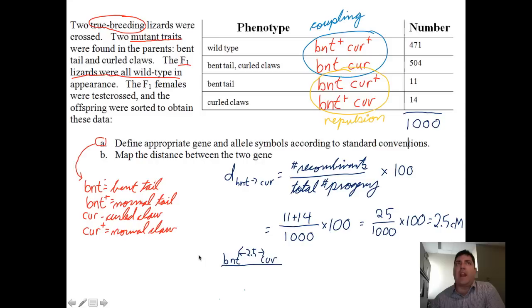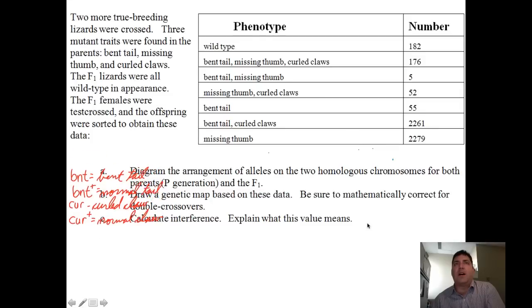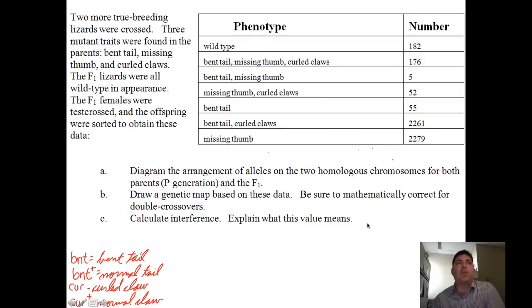So here is a genetic map that demonstrates what we're looking at. And I will carry this on in the next example, in the next movie that I post, where we can take a look at what happens when we add another locus to this.